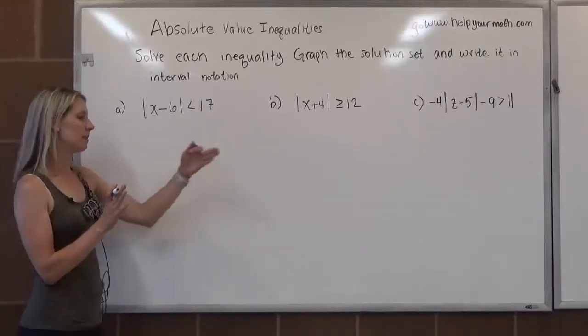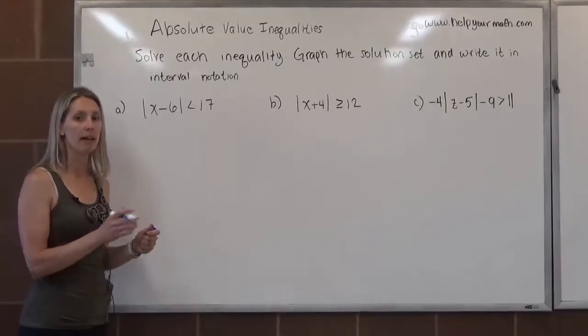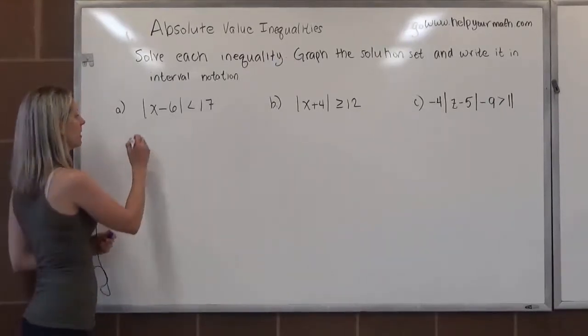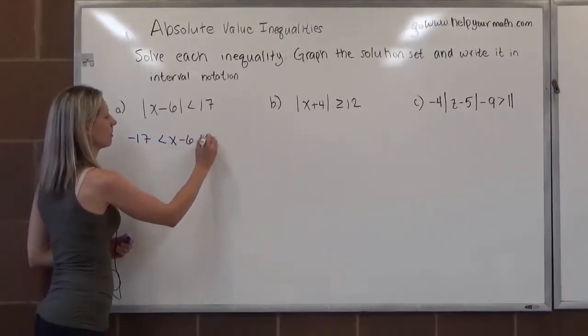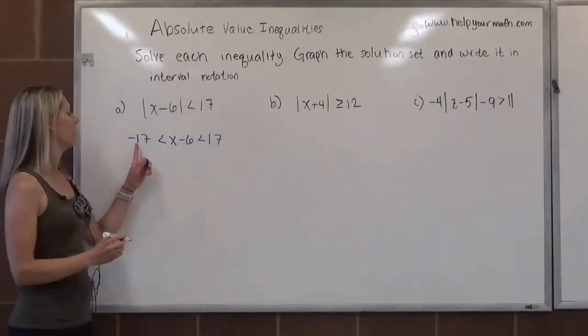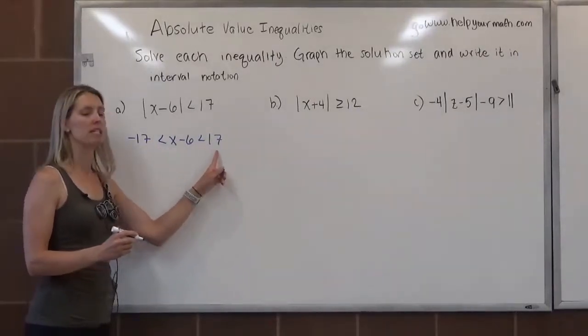So that means if it's going to be closer than 17 units from 0 on a number line, it's going to be in between negative 17 and 17. So we would write it as negative 17 has to be smaller than this here, which has to be smaller than 17.